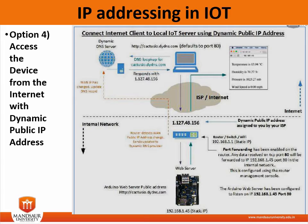When the router detects that the WAN interface IP address changes, it updates the DDNS service provider with the new IP details. When you sign up with one of these providers, you provide a domain name you would like to use — for example, a subdomain of dyndns.com. When you enter that subdomain into the browser, it performs a DNS lookup on the subdomain.